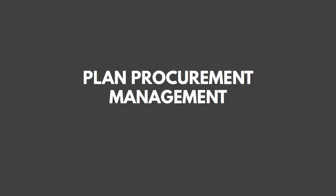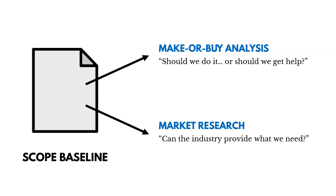In Plan Procurement Management, two of the key tools are Make-or-Buy Analysis and Market Research. In Make-or-Buy Analysis, we're determining what work we're going to do on our own versus what we're going to buy from someone else. Market Research is examining industry and vendor capabilities to determine who could do what we need — whether there's actually a seller or vendor out there that could provide what we're looking for.